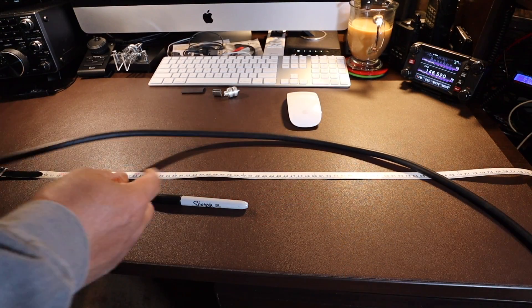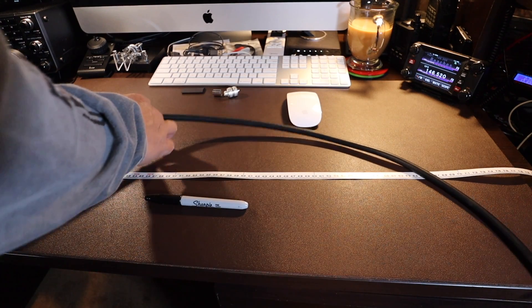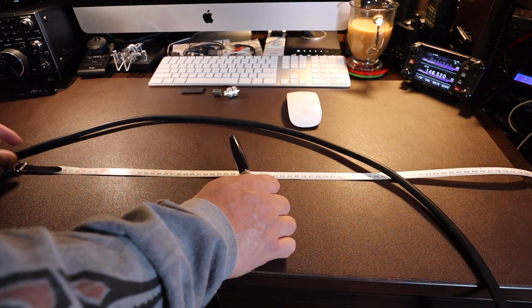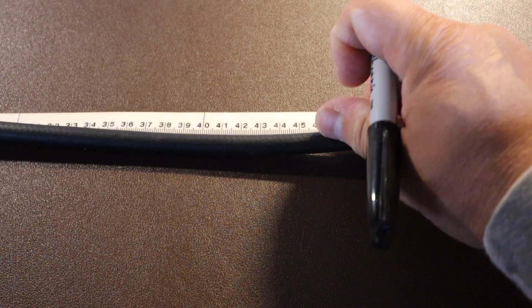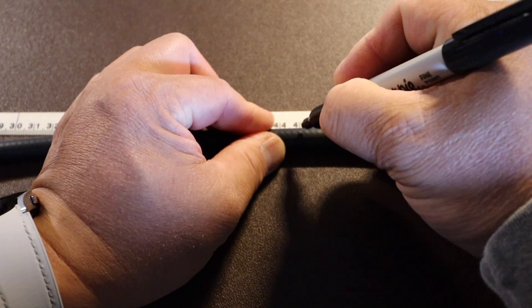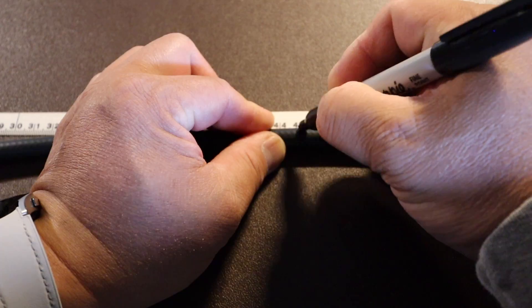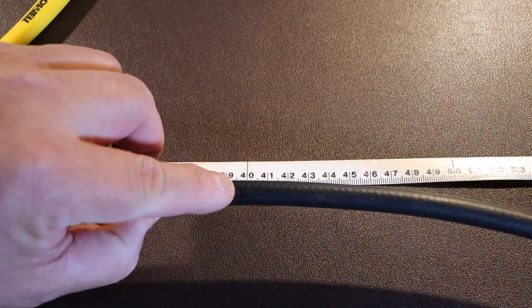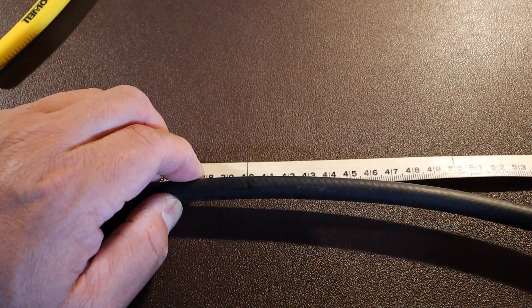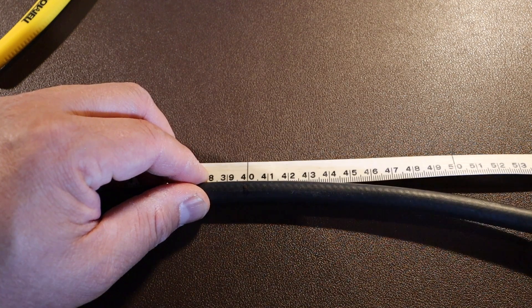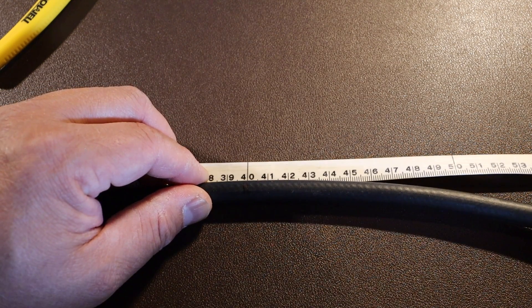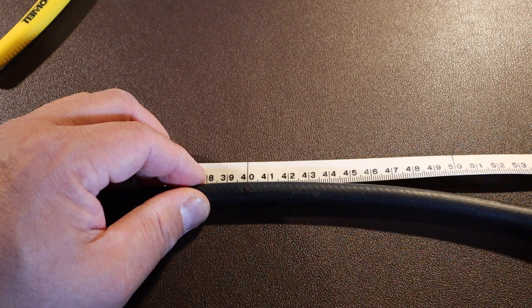Now we're going to mark the middle of the coax 45 centimeters. Now that we have the middle marked, we're going to mark 10 millimeters or one centimeter on either side.